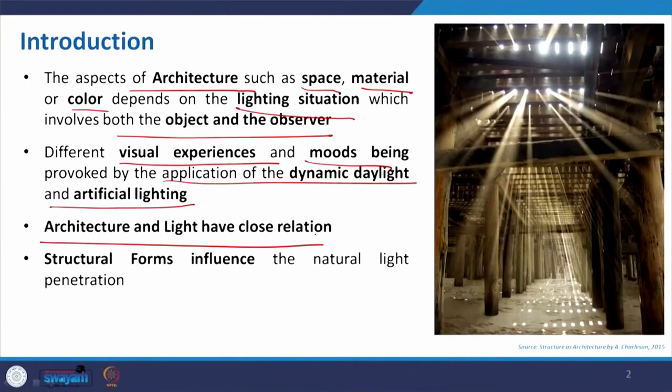When considering artificial lighting, if we go to a restaurant we definitely do not expect very high exposure like what is required in an operation theatre. Maybe a dim light, maybe a different reddish tint or whatever color is preferred — this kind of ambience in the restaurant and party area will change the experience. The same form and infrastructure will look in a different manner. Light and architecture have a very close relation.